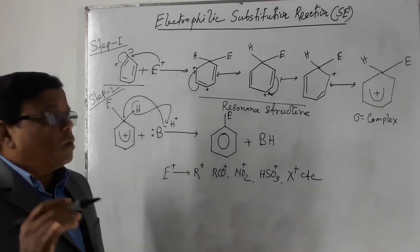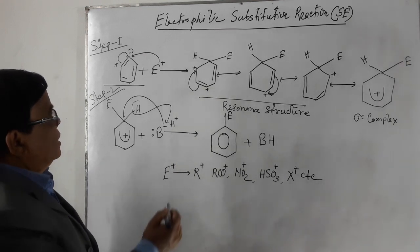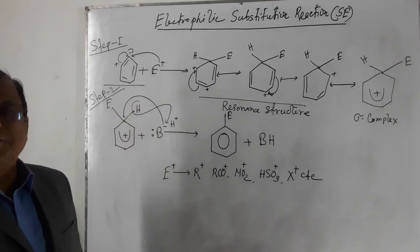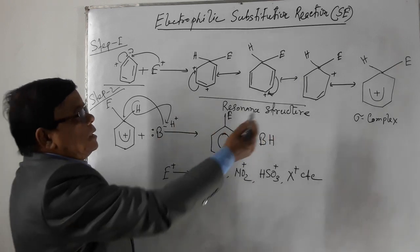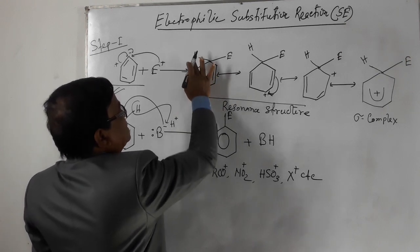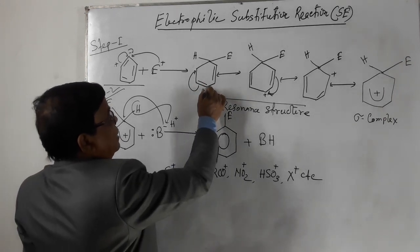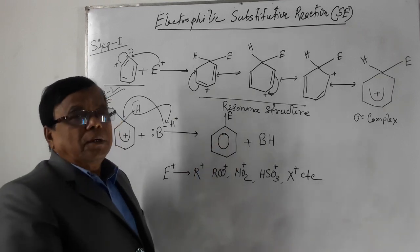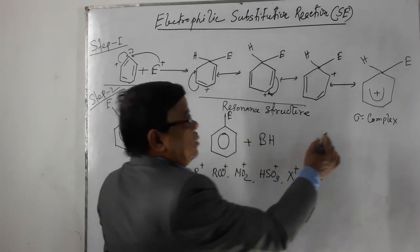In step one, the pi electrons of benzene are attacked by the electrophilic reagent, then the carbons develop a positive charge. The aromatic benzene is converted into a carbocation. This carbocation has a resonance structure, and due to the resonance structure of the carbocation, the aromaticity is destroyed and the reactant forms a sigma complex.